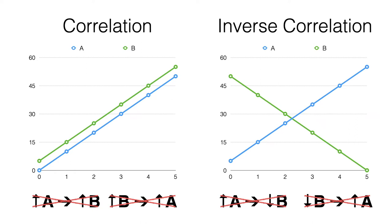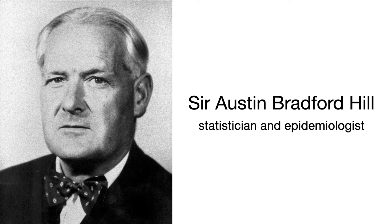What we should do whenever possible, when we make a correlational observation in observational research, is come up with an experiment to test it. Sometimes though, that may not be feasible — on ethical grounds, with the time available, or because financial resources aren't available. In that instance, we might be forced to rely at least partially on observational research to try to get a sense of how likely it is that any observed association reflects causality. In 1965, English statistician and epidemiologist Sir Austin Bradford Hill came up with a useful set of criteria we can apply in this scenario.